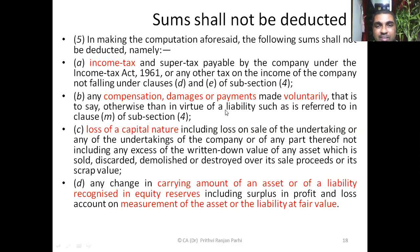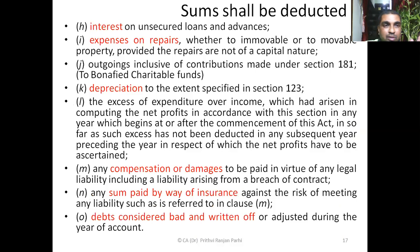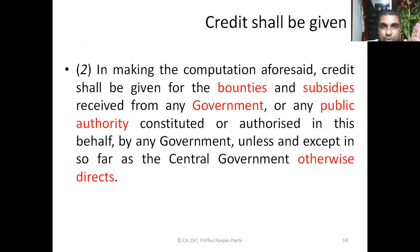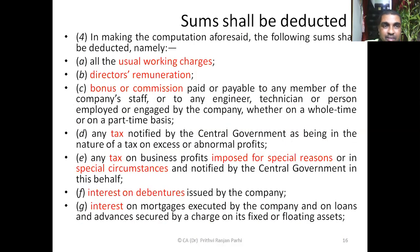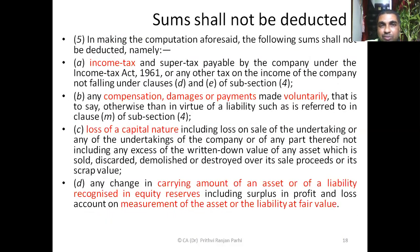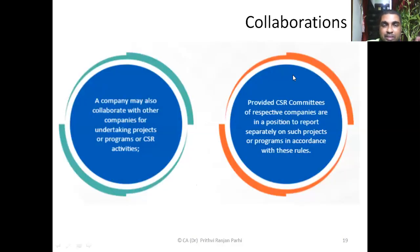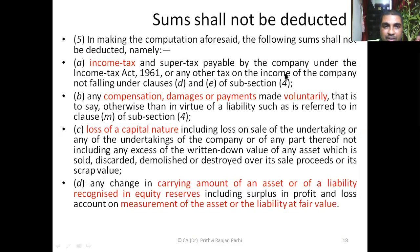To summarize Section 198: subsection 2 — credit shall be taken, these items are considered as income; subsection 3 — credit shall not be taken, not considered as income; subsection 4 — these shall be deducted, considered as expenditure; subsection 5 — these shall not be deducted, not considered as expenditure. Once we know the average net profit of the previous three years, we can compute the minimum 2% required to be spent.